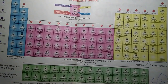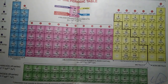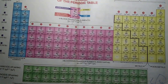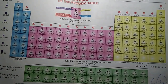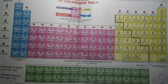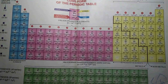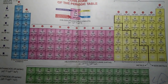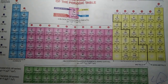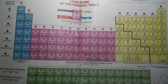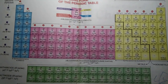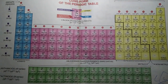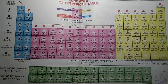Now we will see the P block elements. In group 13, you have boron, aluminium, gallium, indium, and thallium. You can remember them by saying 'bangin aloo gajar in thallium' — bangin for boron, aloo for aluminium, gajar for gallium, in for indium, and thallium.